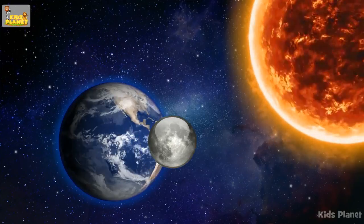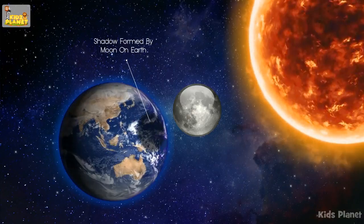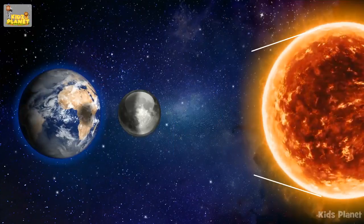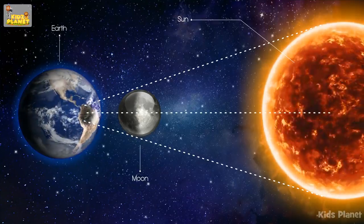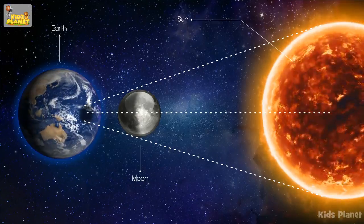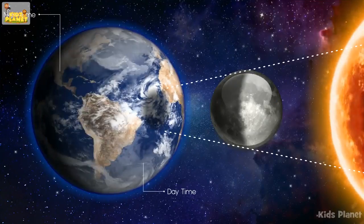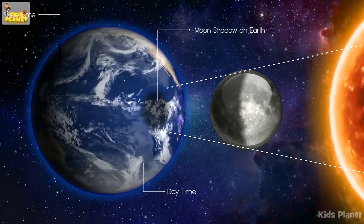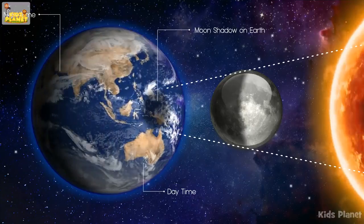An eclipse is a shadow formed in space that makes the sun or moon invisible for some time. For any eclipse to occur, the sun, moon, and earth have to be in a straight line. A solar eclipse occurs when the moon comes between the sun and earth. The moon casts its shadow on the earth, and on some parts of earth, people cannot see the sun.